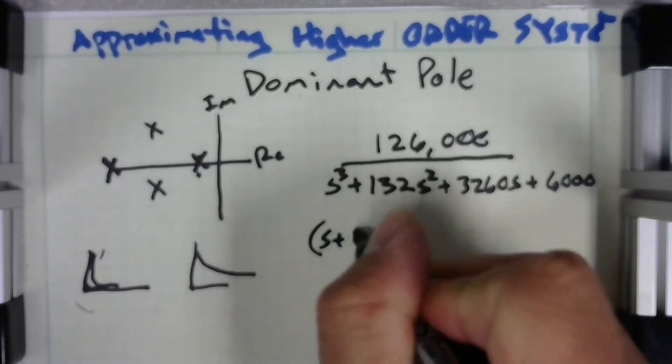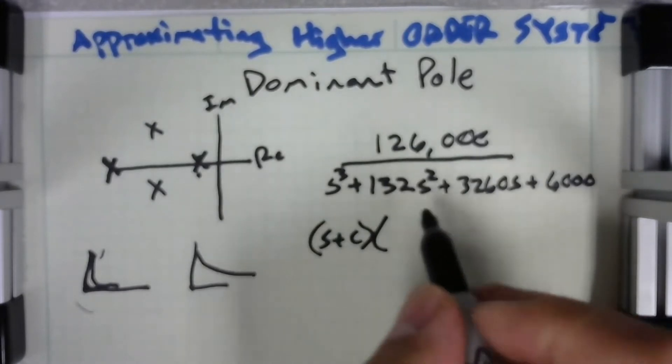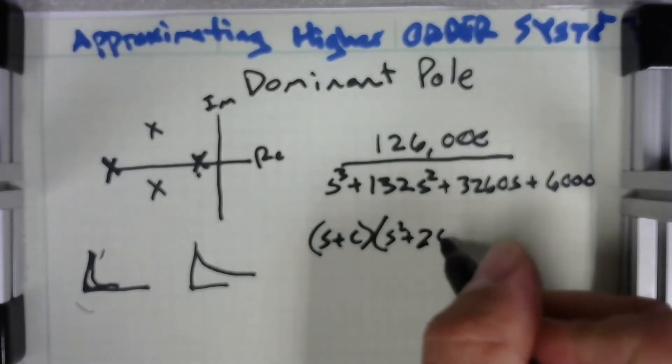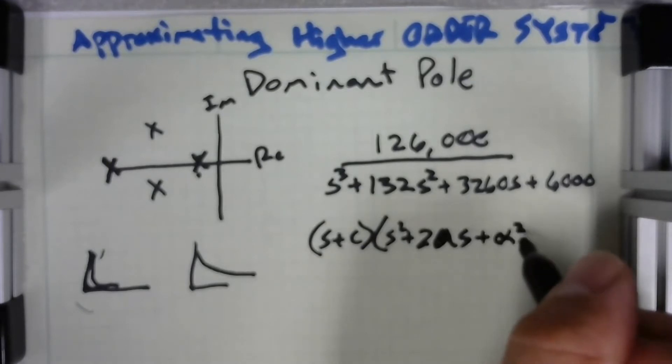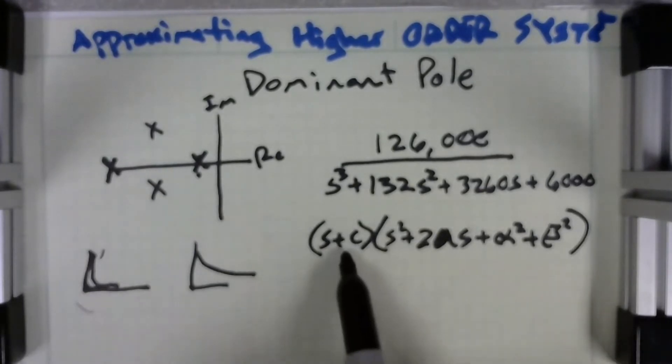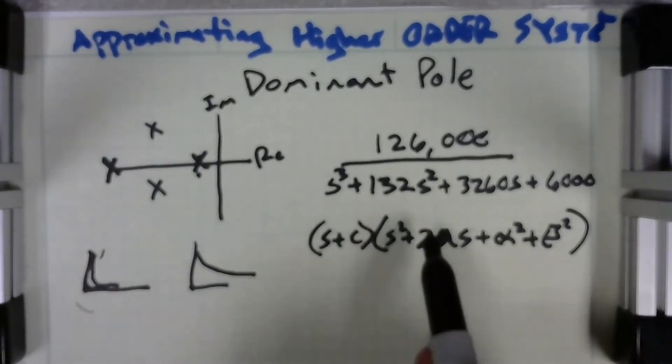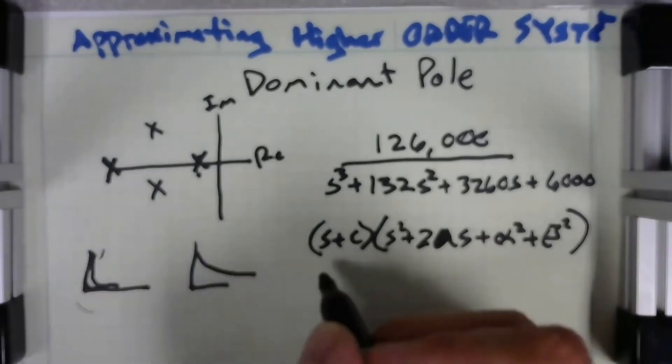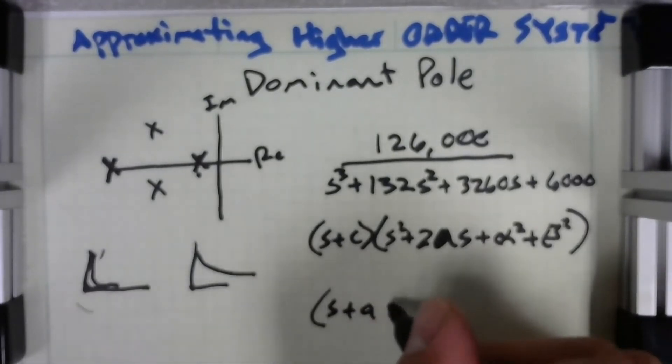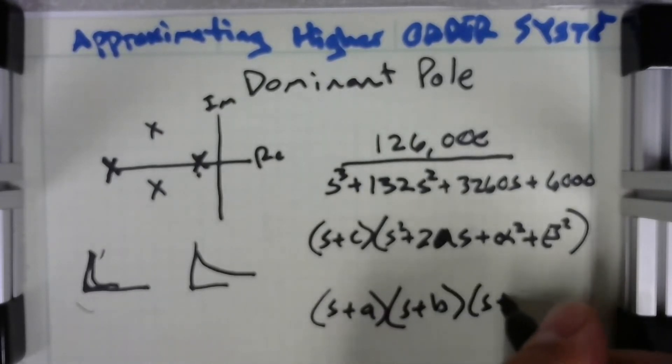So whenever we factor this out to see where our poles and zeros are, you're going to end up with one of two situations. Either you're going to have something that looks like (s plus c) times (s squared plus 2 alpha s plus alpha squared plus beta squared), meaning that here's your one real pole and then you have two imaginary poles making it a third order system. The other thing that you can have is you can have three real poles: (s plus a)(s plus b) and (s plus c).